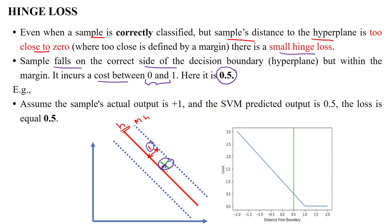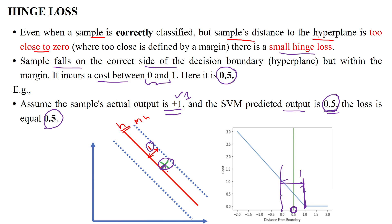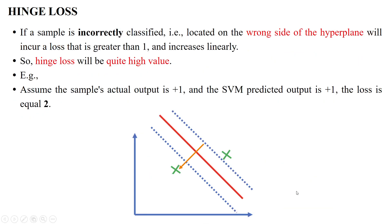For example, if the actual output is positive class and the predicted output is 0.5, the marginal distance is 1 but the predicted value is only 0.5, so there is a loss of 0.5. The data point is placed between the marginal line and the decision boundary, giving a small hinge loss, because the data point's distance from the decision boundary is less than the distance between the marginal line and the hyperplane.